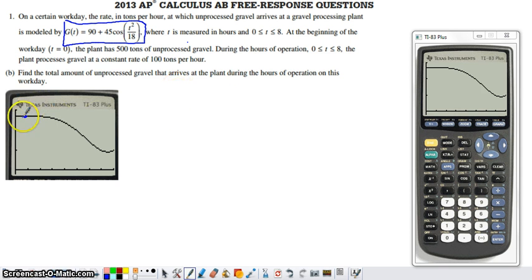We can say that over the course of the first hour, gravel is arriving at about 135 tons per hour, and it's arriving at that rate for about an hour. This estimate for how much gravel arrives over the course of the first hour is essentially the area of this rectangle that I'm attempting to draw into the graph right here.